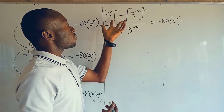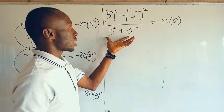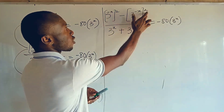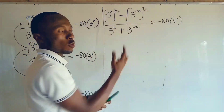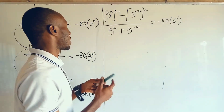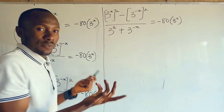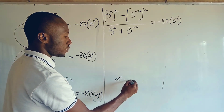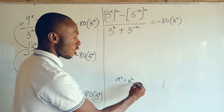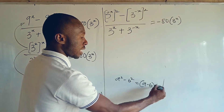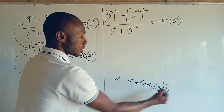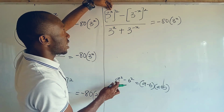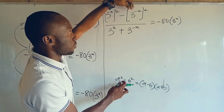If you look at the numerator of this rational expression, you can see that we can apply the difference of two squares. Both terms are squared, so we can apply the difference of two squares. As a quick reminder: if you have a squared minus b squared, it's going to be a minus b, times a plus b. That is the idea of the difference of two squares.